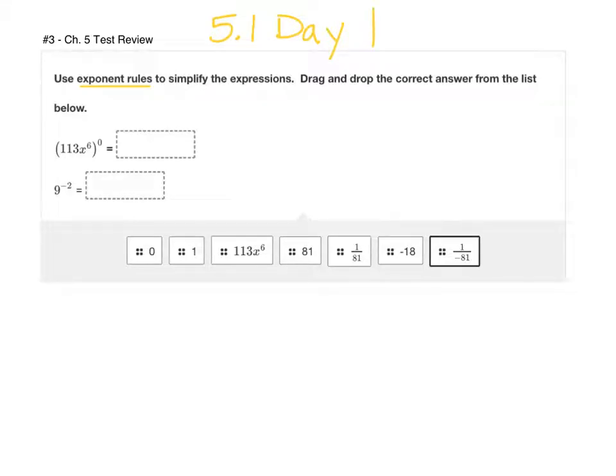First, in 5.1 day one, we learned that anything to the power of zero is equal to one. So notice how this first expression, it's 13x to the third, but that whole thing is in parentheses. And we know that anything to the power of zero is equal to one. That's our zero power rule.